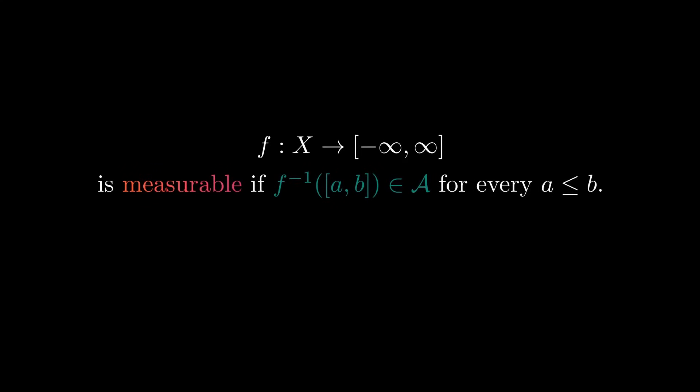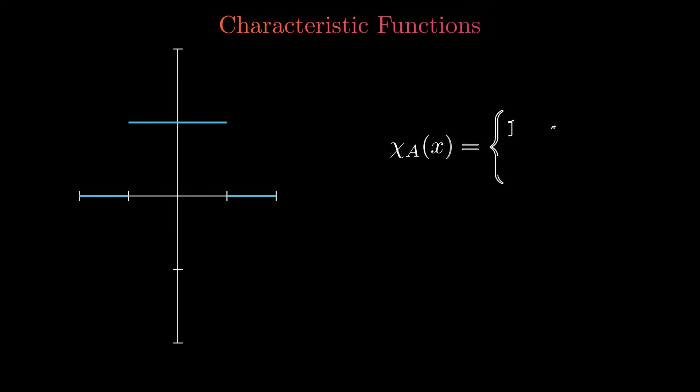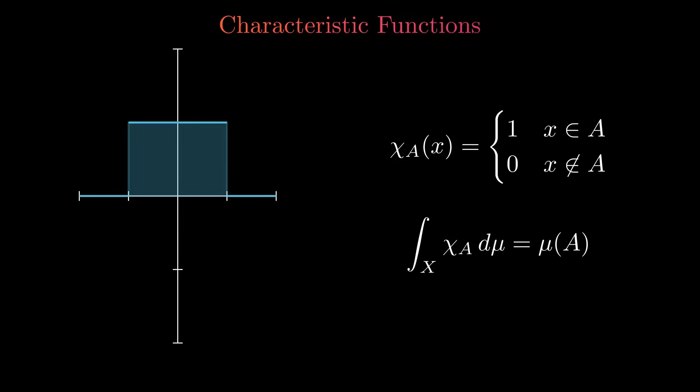Let's look at the simplest example of a measurable function: the characteristic function of a measurable set. The function takes on the value 1 if the x value is in the measurable set, and otherwise takes on the value 0. The area under the curve of this function is just a rectangle whose area is the measure of the measurable set. Thus, we define the integral of a characteristic function as the measure of the measurable set it describes.